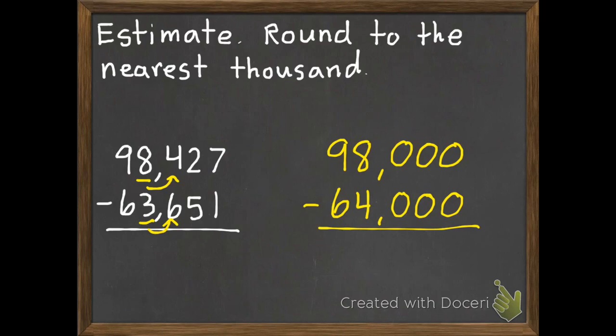This is subtraction. It's another thing you need to watch out for if we're adding or subtracting. So this will be 0, 0, 0. 8 subtract 4 is 4, 9 subtract 6 is 3. And there we go.